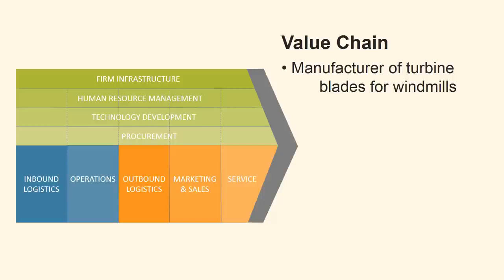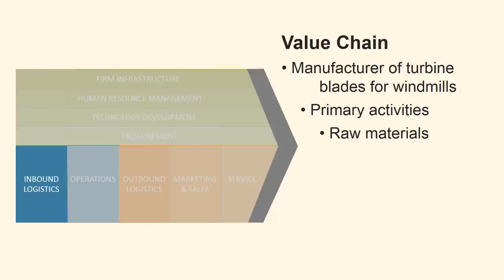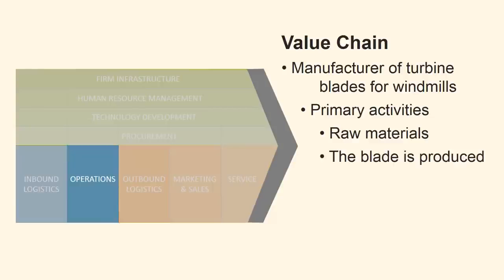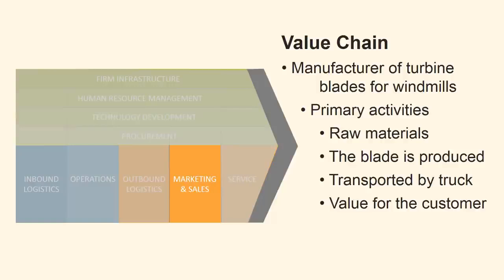Now we shall review an example of the use of the value chain with a manufacturer of blades for wind turbines. For simplicity, we will first review the primary activities. A manufacturer receives inbound logistics raw materials to be included in the blade later. The raw materials are then part of operations, in which the blade will be produced. When the finished turbine blade is transported by truck, it is part of outbound logistics. It is probably due to quality and durability that we have convinced the buyer about the value of our blades — this is part of marketing and sales. The maintenance of the blade is part of service.